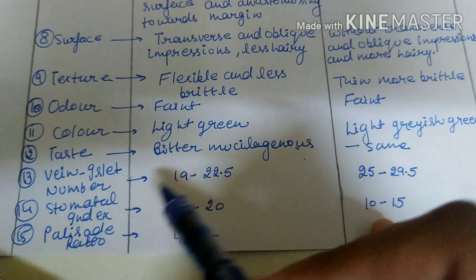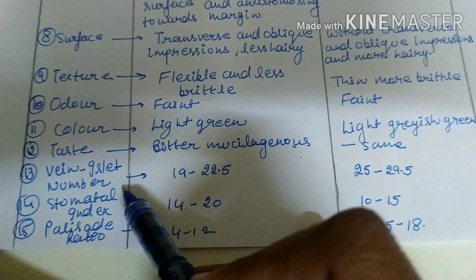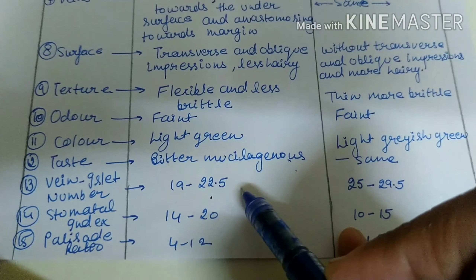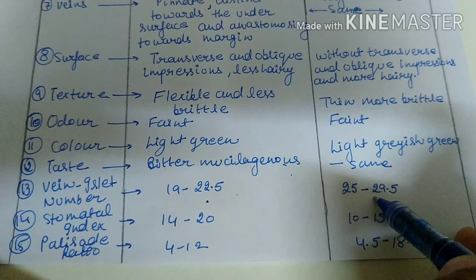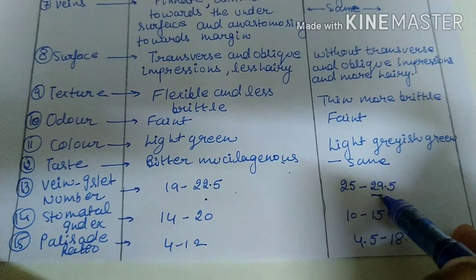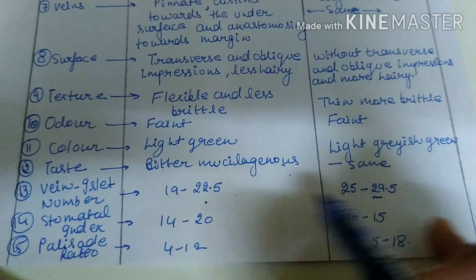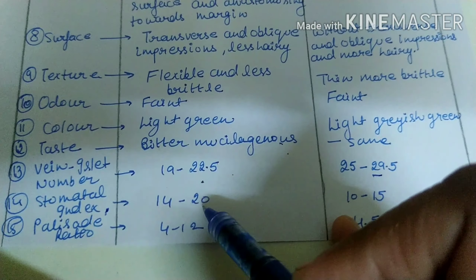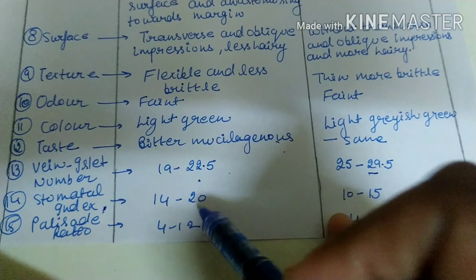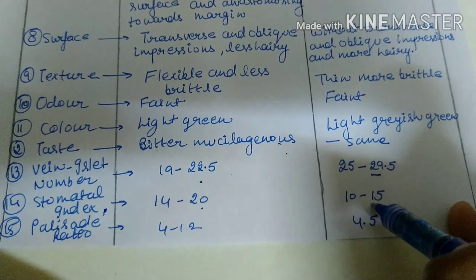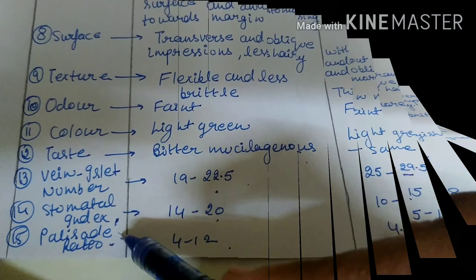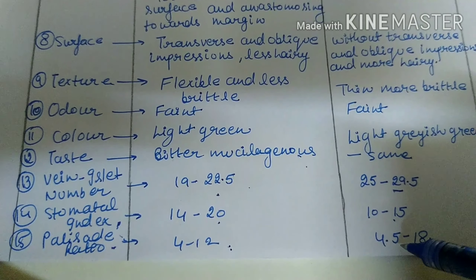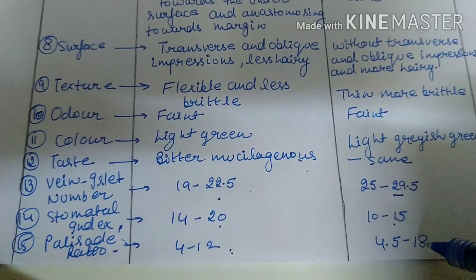Regarding the vein islet number, it is 19 to 22.5 for Indian Senna and 25 to 29.5 for Alexandrian Senna. Regarding stomatal index, it is 14 to 20 for Indian Senna and 10 to 15 for Alexandrian Senna. The palisade ratio of Indian Senna is 4 to 12, and for Alexandrian Senna it is 4.5 to 18.